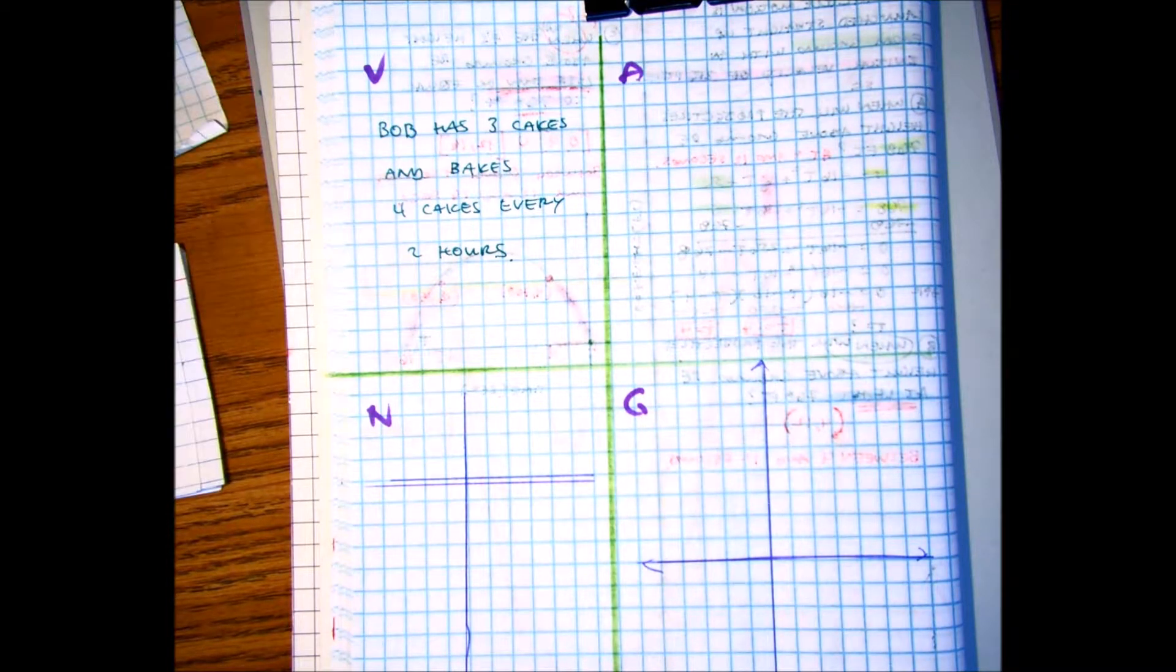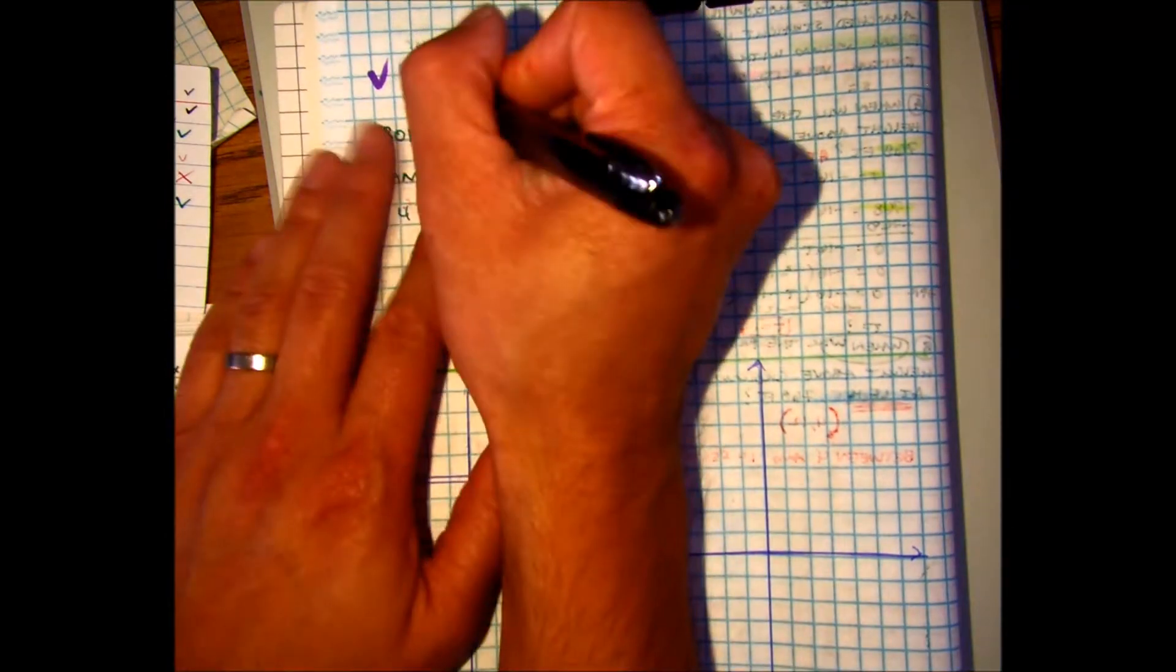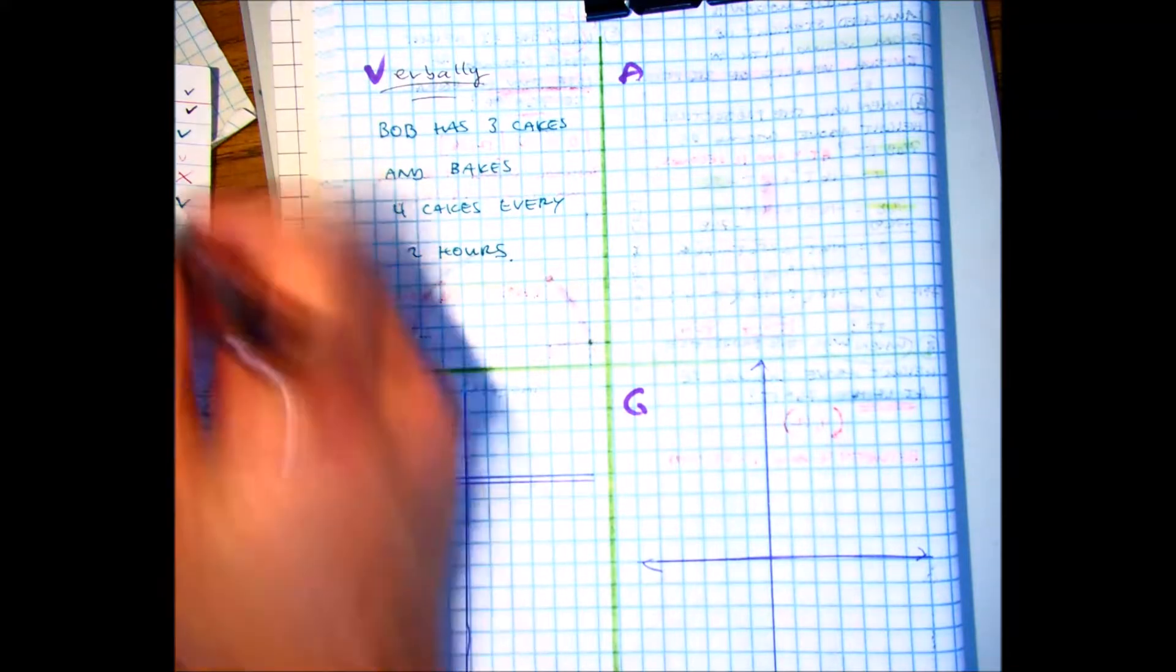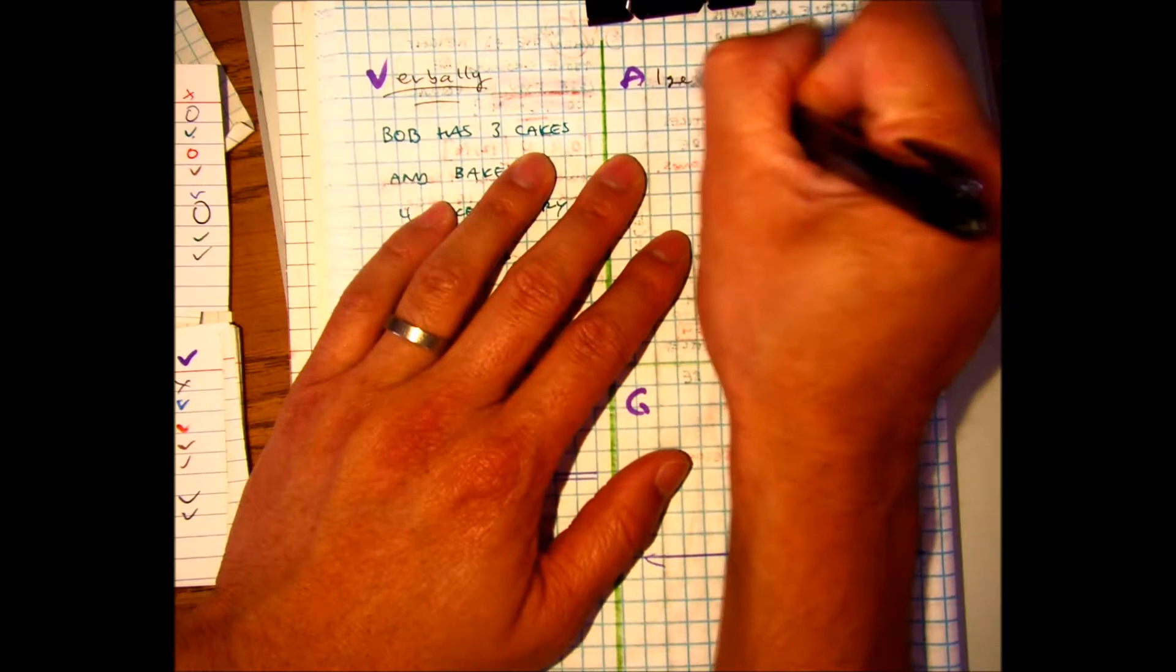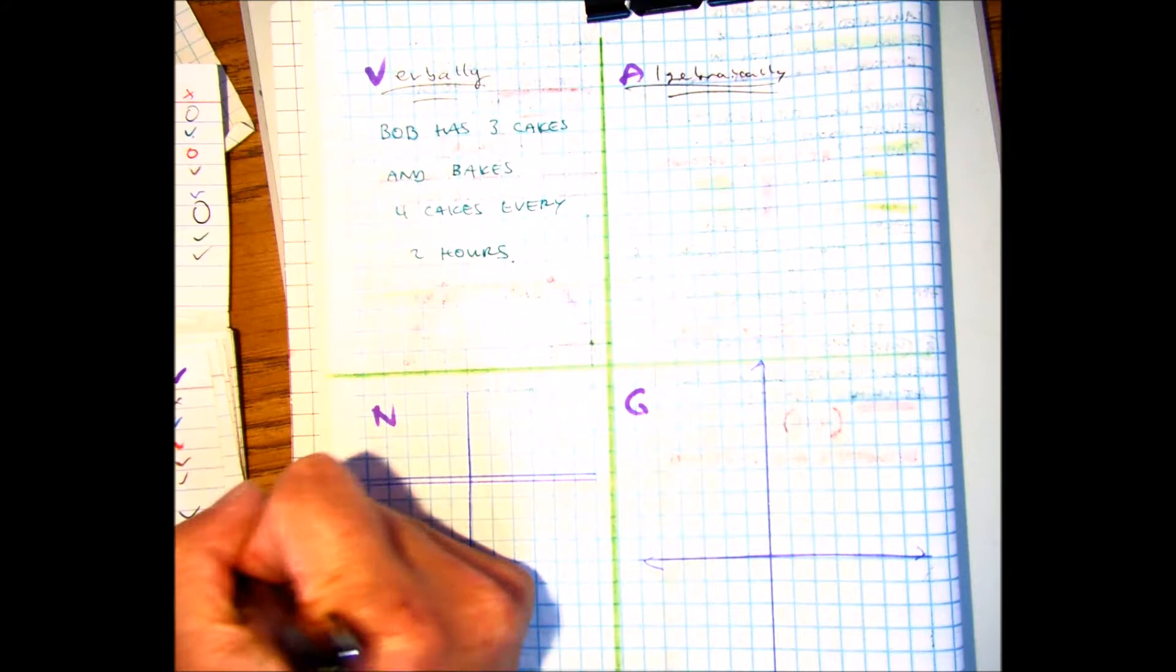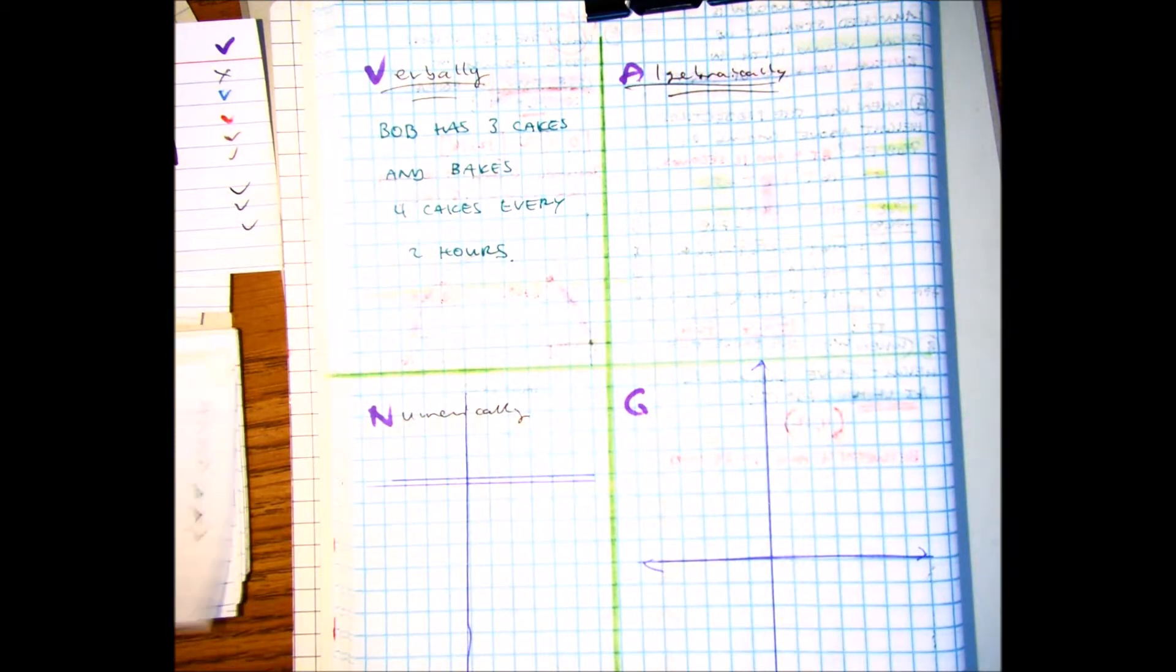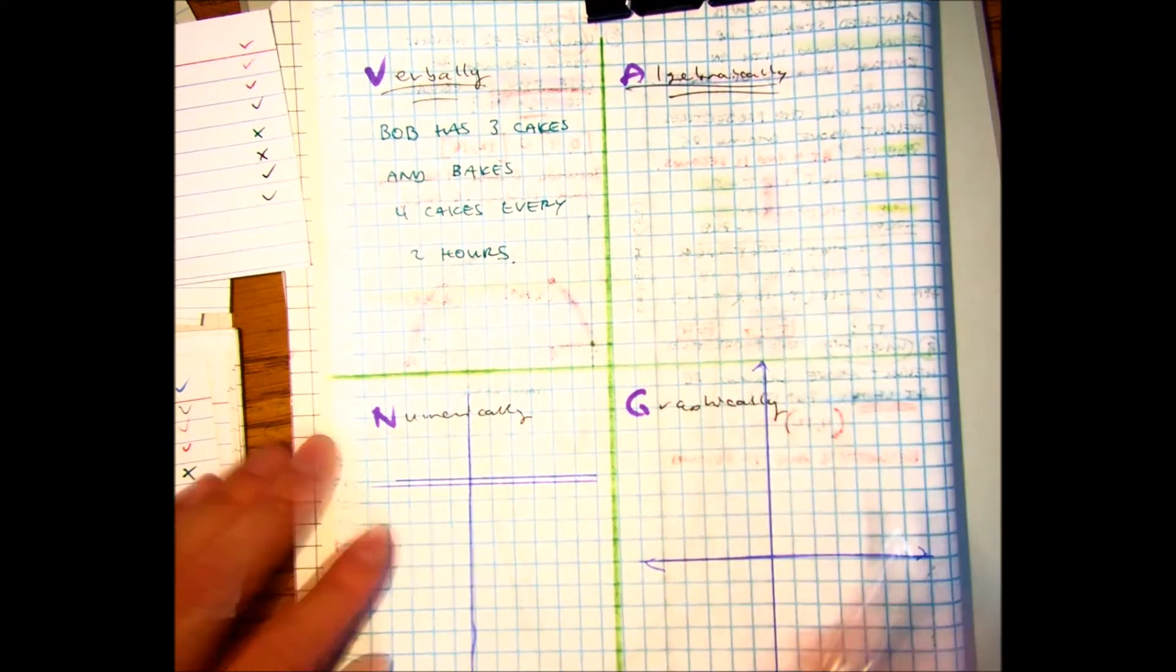Alright. When I call on your name, you're going to tell me what each of the letters stands for. Brooklyn, V. So verbally is just like the word problem. In words, can you express what we're writing? Abigail, A. So these are the x's and the y's. Victoria, N. This is our table of values. Aaron, G. That's putting a visual representation.